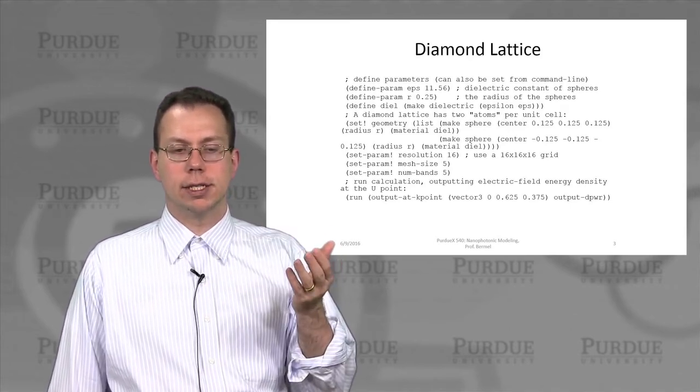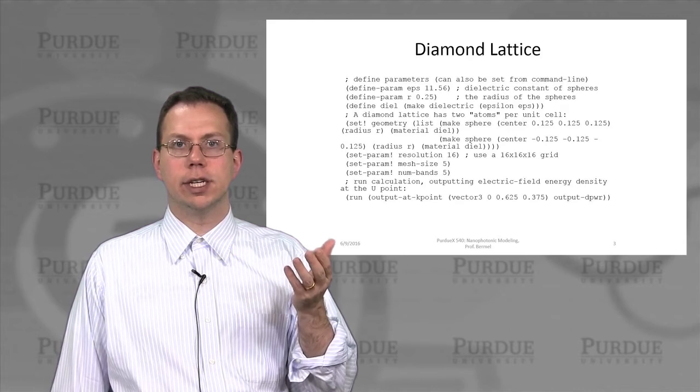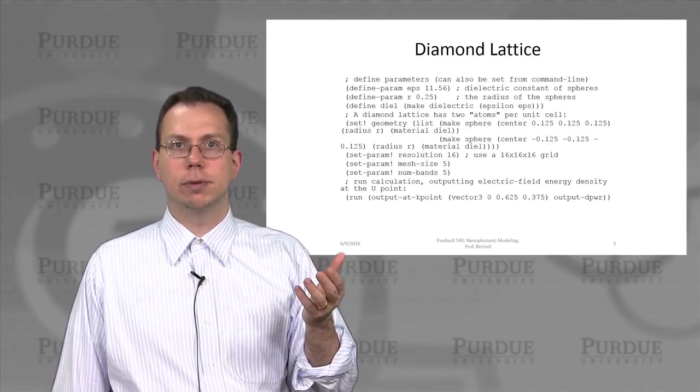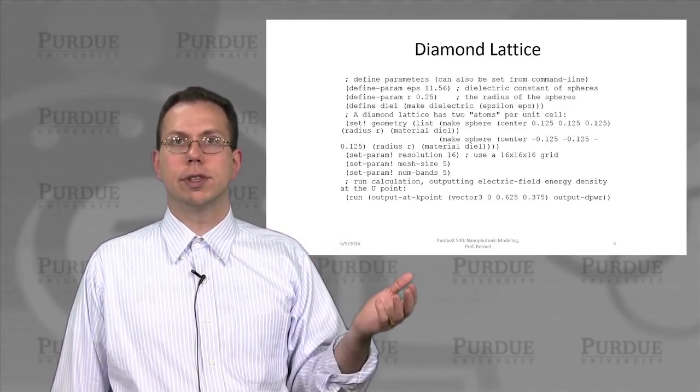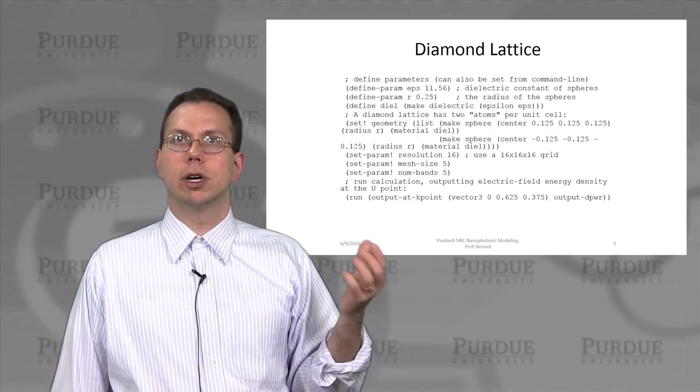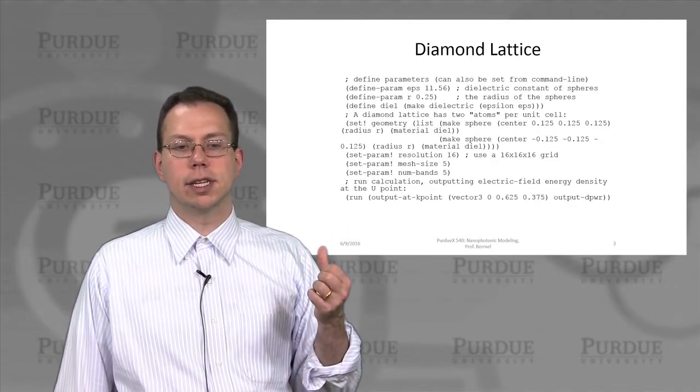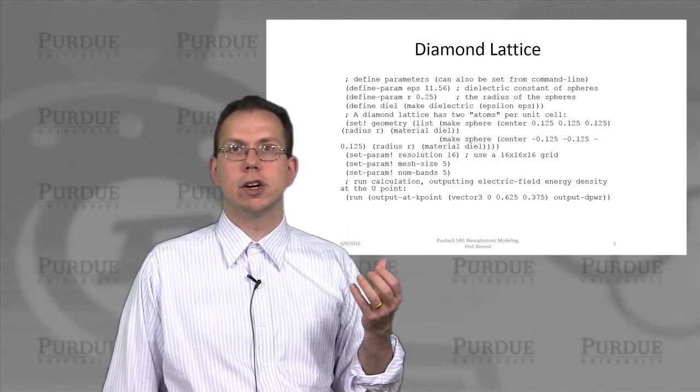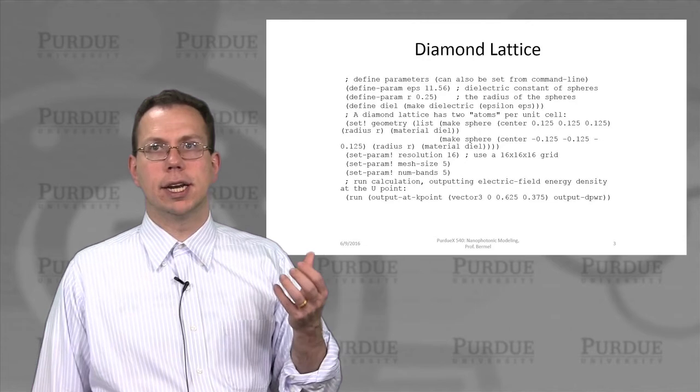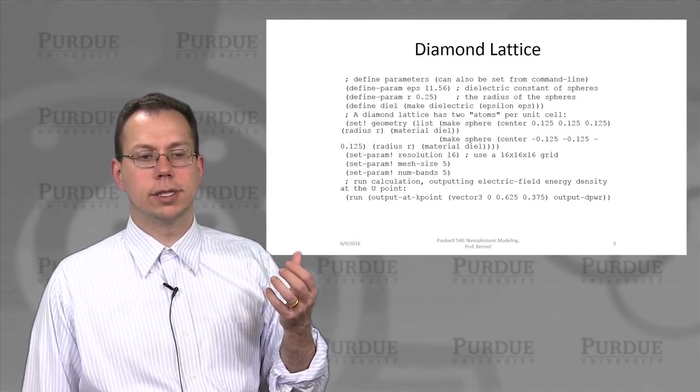And because this is a 3D calculation, we might want to use a slightly lower resolution. So instead of the 32 resolution per unit distance that we had before, now we use 16. So that gives us a 16 by 16 by 16 grid, or about 4,096 overall grid points.